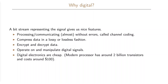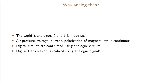Another reason why digital signals are attractive is that digital electronics are today very cheap. We can add all the things listed here and still not pay very much for the equipment needed. As an example, a modern processor has several billions of transistors but still costs only around 100 dollars, and the price per transistor is decreasing every year. We could also ask why we need analog if digital has so many advantages. One reason is that the world is analog — the zeros and ones we use in digital systems are made up. What is happening around us is actually analog: air pressure, voltage levels, current, and the polarization of magnets are all analog. Digital circuits are constructed by using analog circuits, and digital transmission is realized by using analog signals — we just interpret the received signal as digital.